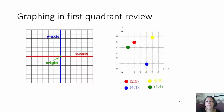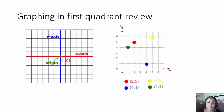Let's do a quick review of graphing in the first quadrant. I just want to remind you of where the origin is. The origin is where our x-axis, our horizontal axis, and our y-axis, our vertical axis, meet. Our x-axis, we normally label it with an x, is our independent variable. And on our y-axis, we have our dependent variable. Y always depends on the x.